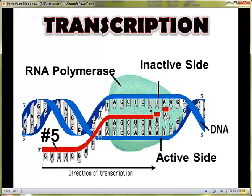So RNA polymerase unzips the DNA to break the hydrogen bonds. It then adds the appropriate RNA nucleotides to the active side temporarily. After the RNA is assembled, it's the job of RNA polymerase to make sure that they were assembled in the proper order — so RNA polymerase proofreads the information.